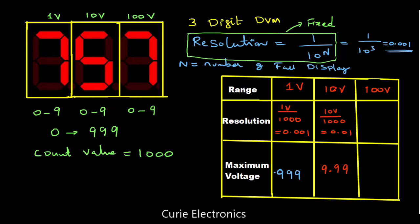For the 100 volt range, the resolution is 100 upon 1000 — which equals 0.1. So the maximum voltage it can measure is 99.9 volt. That is the maximum voltage it can measure.